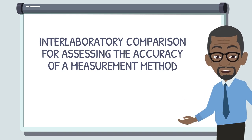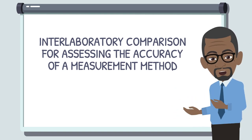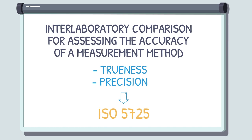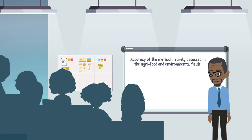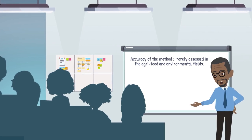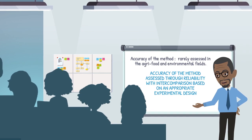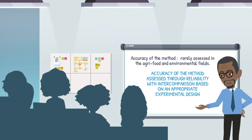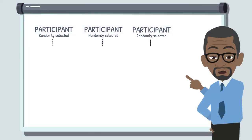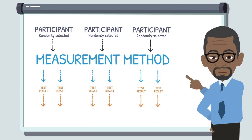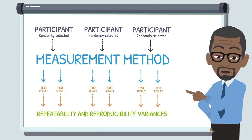If we wish to estimate the accuracy of a measurement method, we must focus on the method's performance by quantifying its trueness and precision. This purpose is achieved by the ISO 5725 series of standards, which can be divided into six complementary parts. It should be noted that metrological traceability of a value is not easily obtained in the agri-food and environmental fields. This is why the trueness of the method is rarely estimated in these fields. Instead, the method's accuracy will be assessed in terms of precision, using an interlaboratory comparison based on an appropriate experimental design. Randomly selected participants use the same measurement method and apply it rigorously, reporting at least two independent test results. The purpose is to estimate the repeatability variance and reproducibility variance.